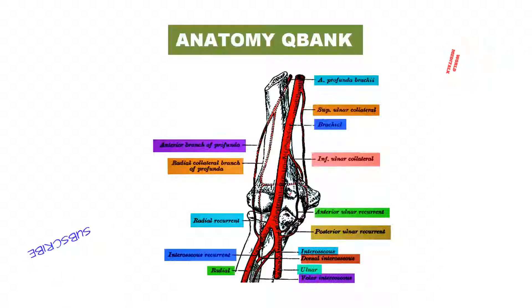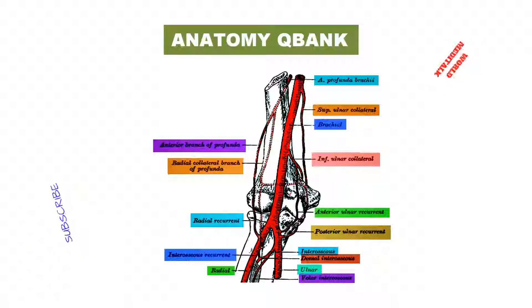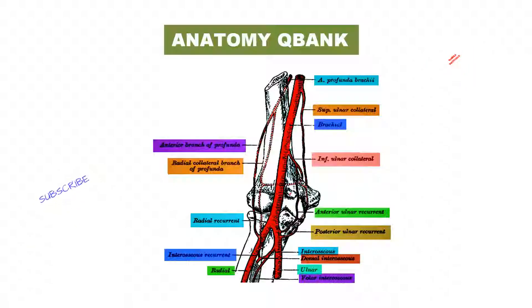Those behind the medial epicondyle are the inferior ulnar collateral, the posterior ulnar recurrent, and the posterior branch of the superior ulnar collateral.